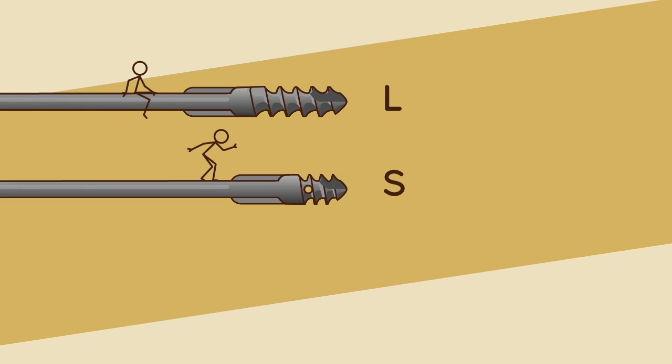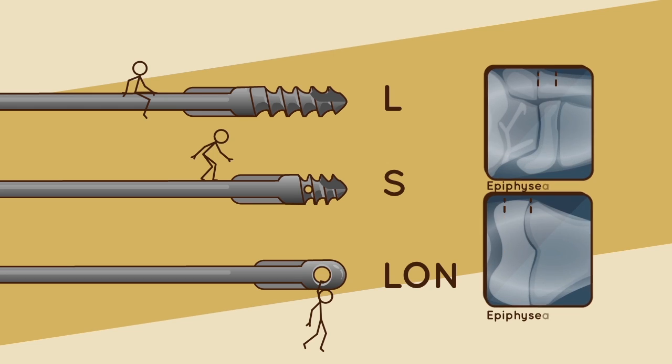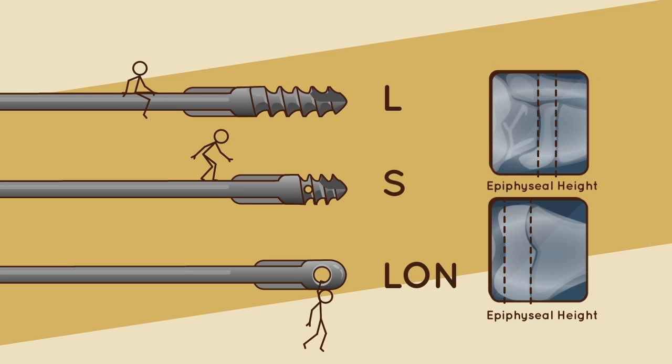Thread type. The choice of L (long), S (short), or LON series, which defines the length of the distal thread or non-threaded fixation, should be based on the height of the distal epiphysis as measured from AP x-ray film.